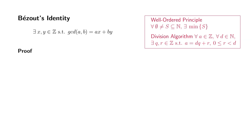Let's look at Bézout's identity. Here's the statement: there exist integers x and y such that the greatest common divisor of a and b can be written as ax plus by, which is a linear combination of a and b.